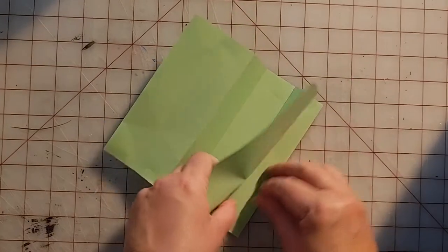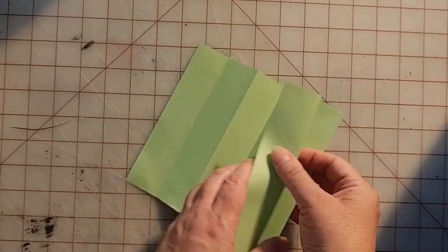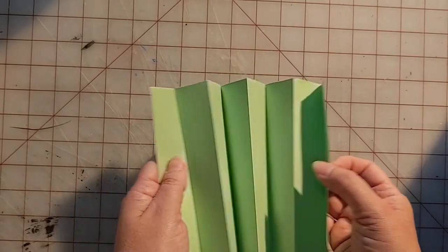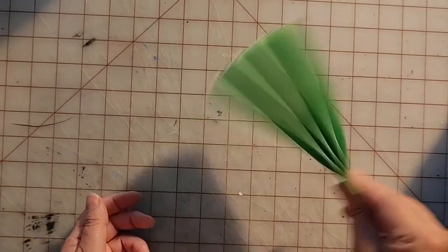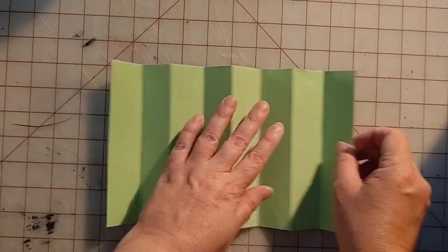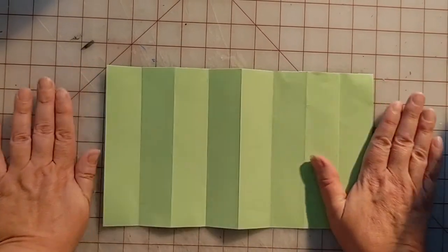Now if you've ever made a fan out of a piece of paper you've probably done this fold. It's called an accordion fold, so I could hold it here and it would make a nice fan. So this is step one, an eight fold accordion.